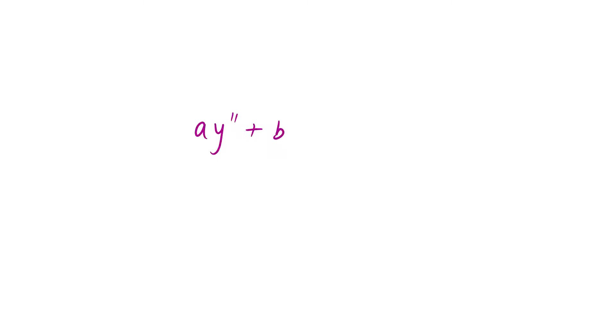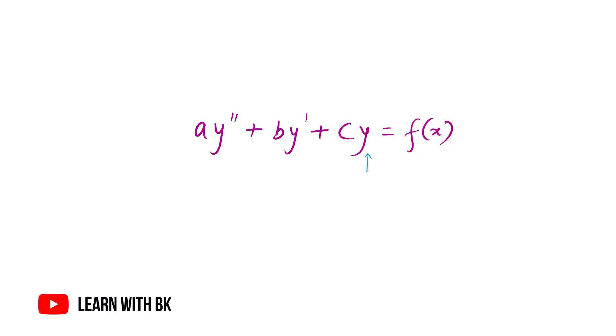To introduce a linear second order differential equation ODE, we can write it in the form: a·y'' + b·y' + c·y = f(x). Here y is the unknown function, and y' and y'' are the first and second derivatives of y with respect to x — that is dy/dx and d²y/dx² respectively.